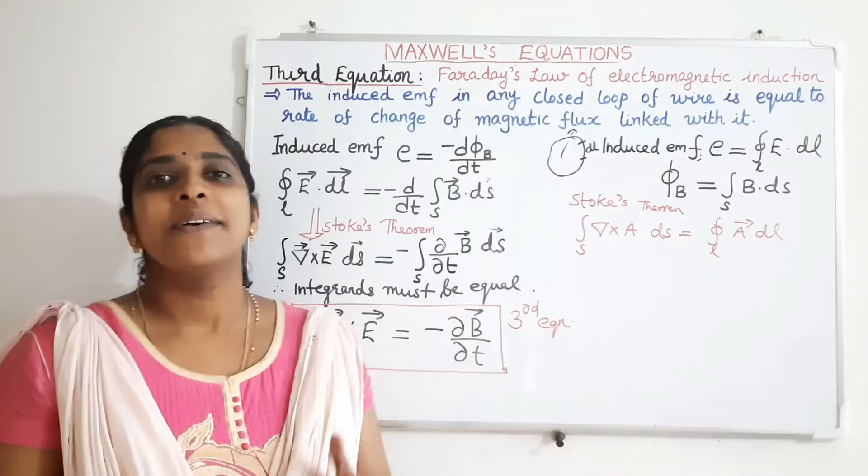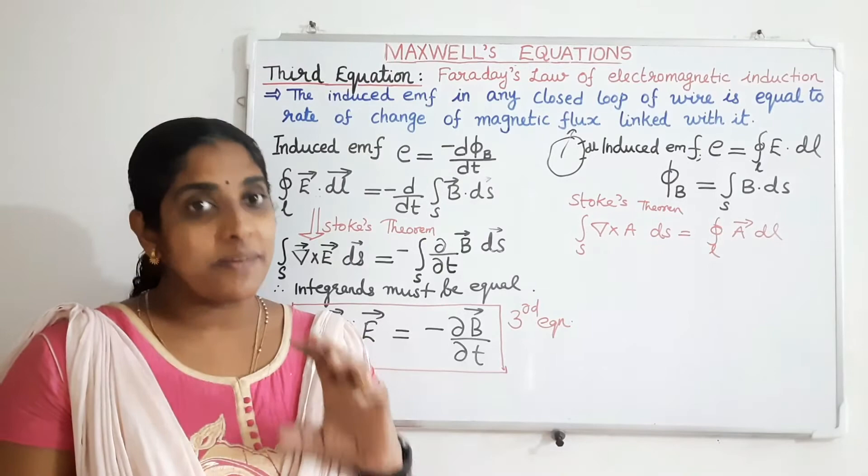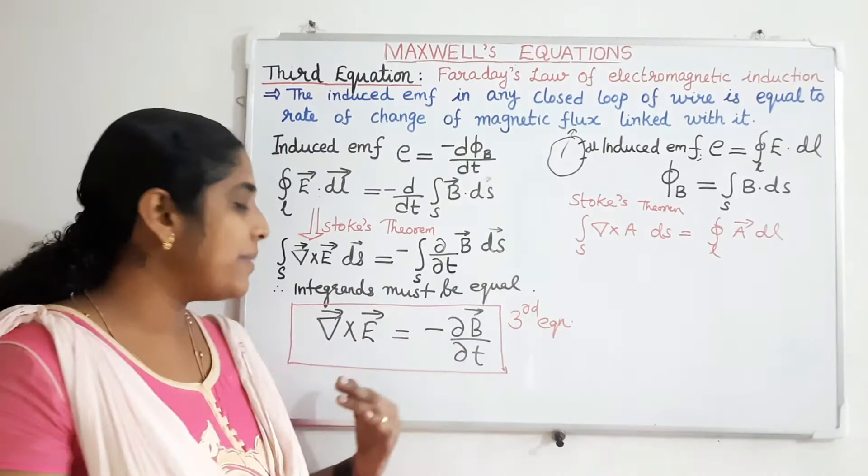Maxwell's third equation is del cross E equals minus ∂B/∂t, based on Faraday's law of electromagnetic induction. This means an electric field can also be generated by a time-varying magnetic field. If the magnetic field is not varying — that is, if it is a static field — then del cross E equals 0.